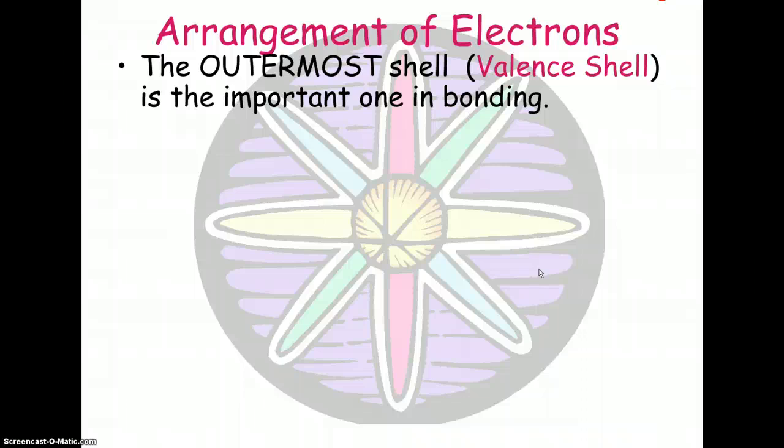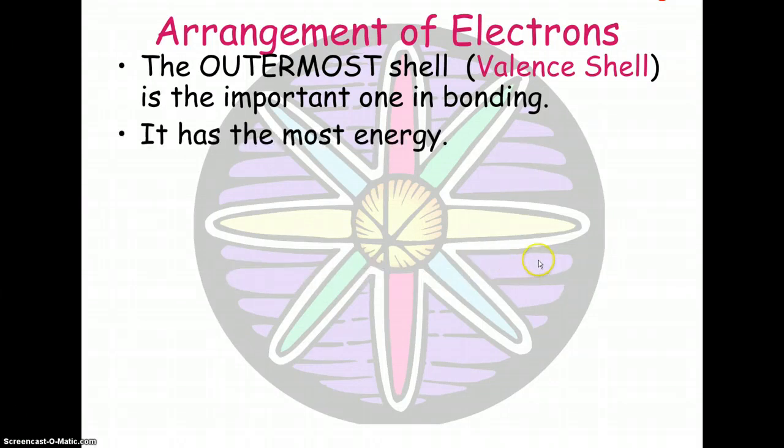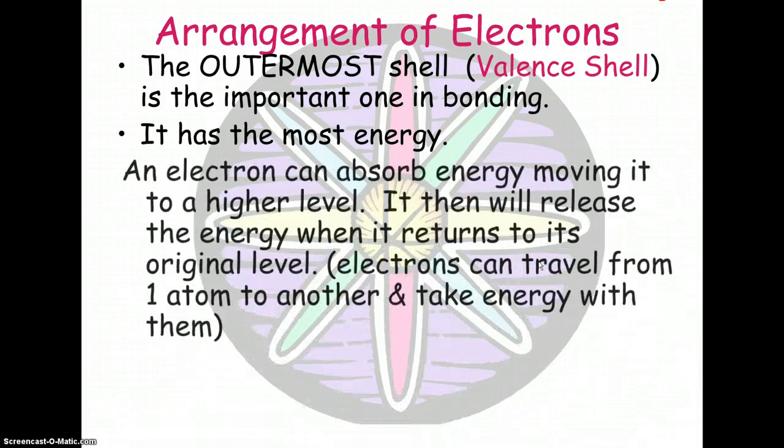Contains the electrons that are going to determine how that atom is going to react with other atoms. It's going to either give away electrons, pick up electrons, or share electrons. And the outermost level has the most energy.